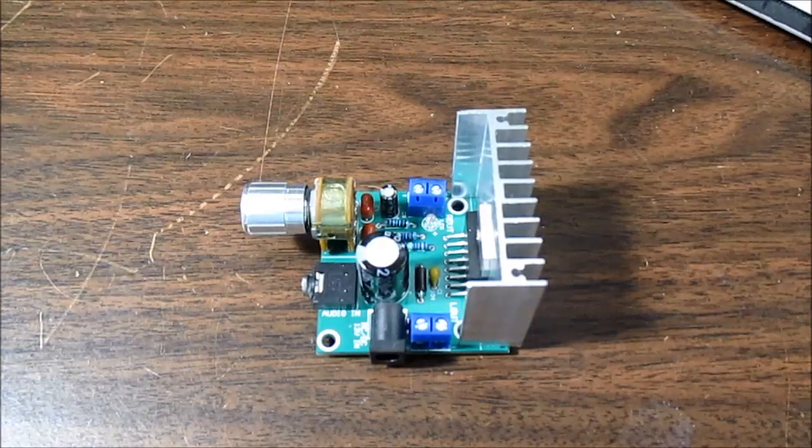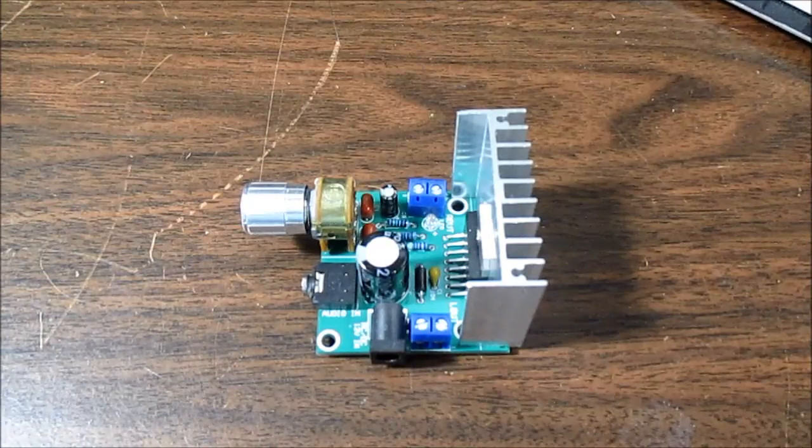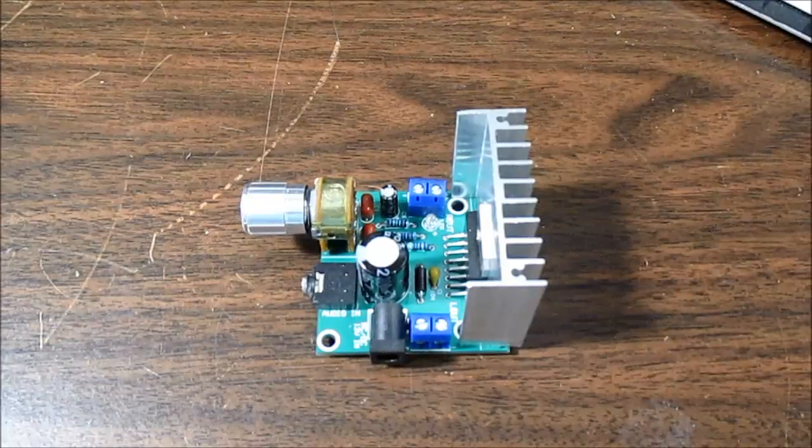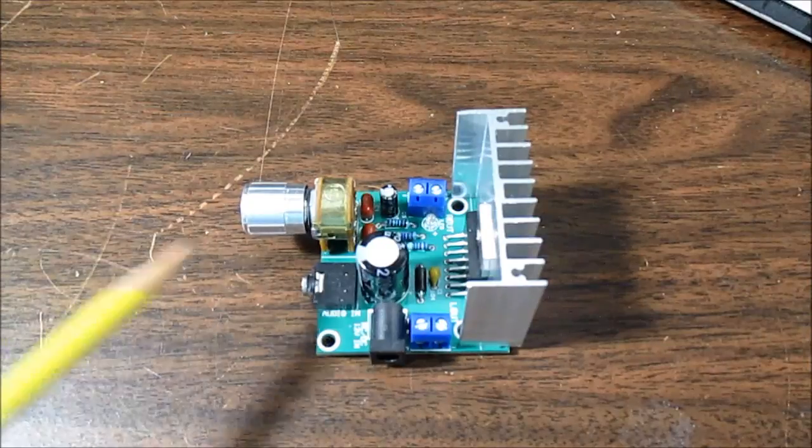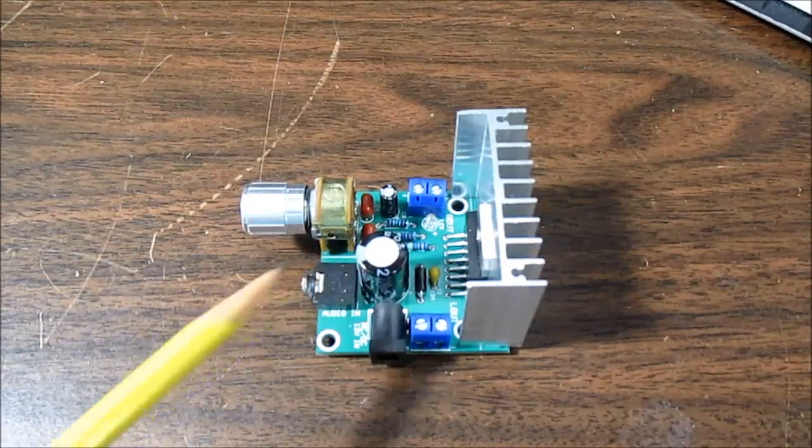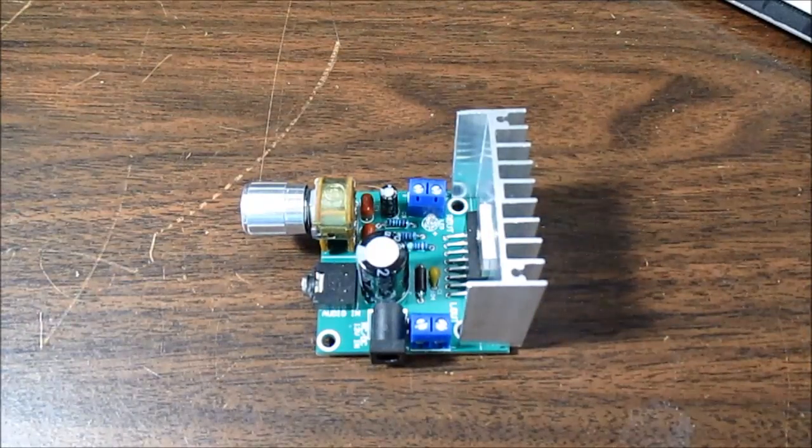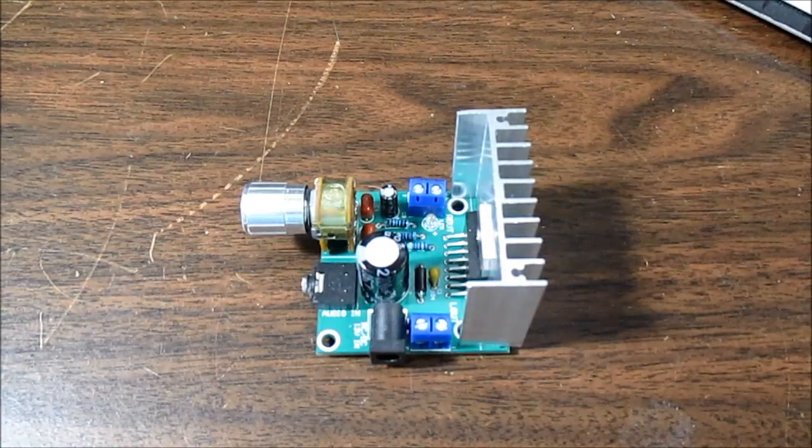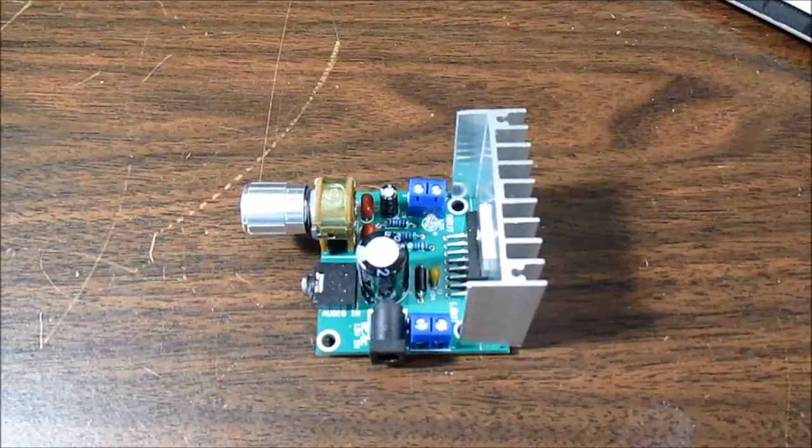One question that sometimes arises is how to connect a mono signal to a stereo amplifier, or vice versa, how to connect a stereo signal to a mono amplifier. There are a lot of people who play musical instruments and often have a mono signal they want to connect to a stereo amplifier, or they have a situation where they just need one speaker and they have a mono amplifier but they need to combine a stereo signal to play into that amplifier. That's what we'll talk about in this video.